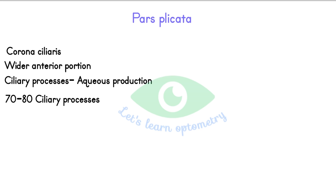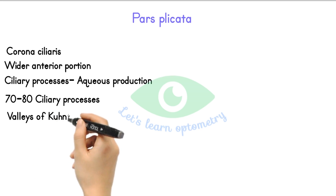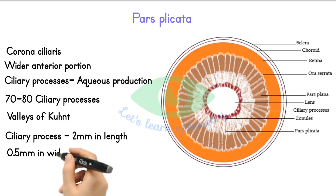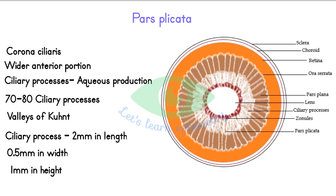The regions between the ciliary processes are called the valleys of Kuhnt. This is an image of an eyeball viewed from the posterior side. The outer layer shows the ciliary core and the retina. The central white circle shows the posterior lens surface. The brown flower-like pattern is the pars plana and the white portions are the pars plicata, shown in white because of the ciliary processes located there. The zonules connect the lens with the ciliary body. The ciliary process measures approximately 2 mm in length, 0.5 mm in width, and 1 mm in height, though there are significant variations in all measurements.